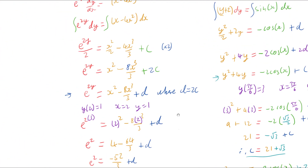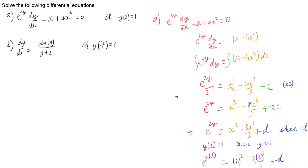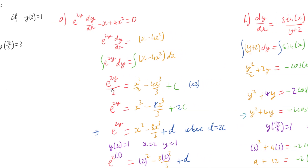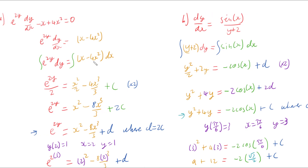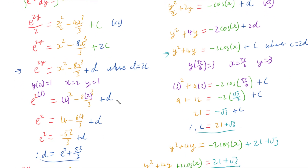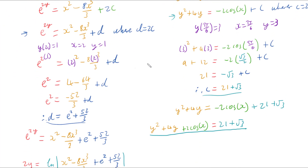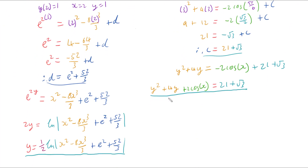To solve differential equations involving both x and y, we isolate the x's and y's on either side of the equal sign, integrate both sides, get some form of equation, find the constant using the given initial information, and neaten it up as much as we can.